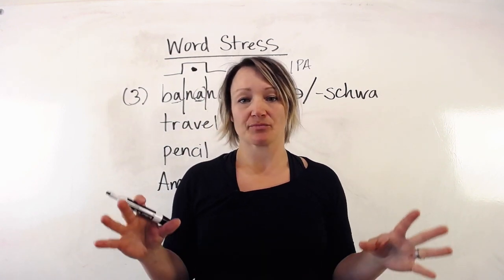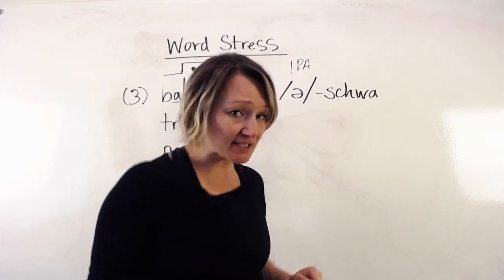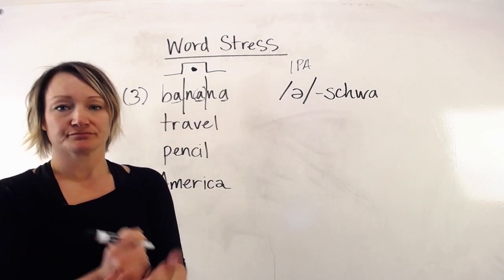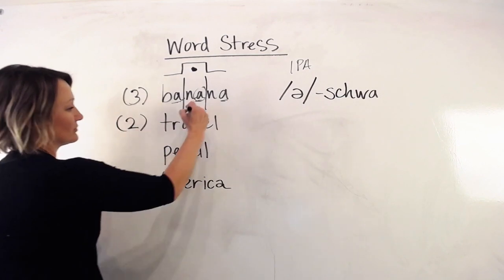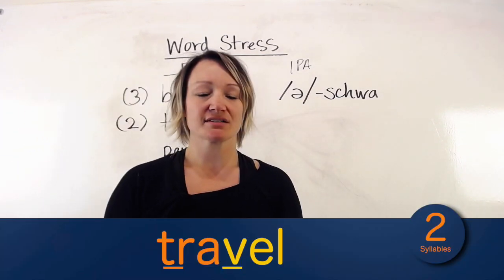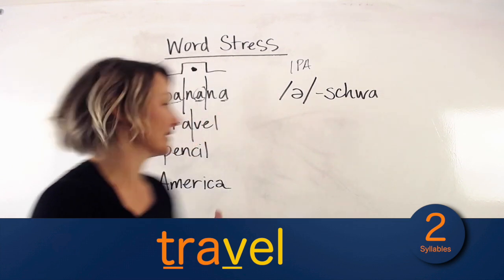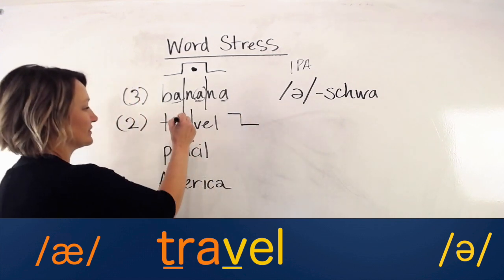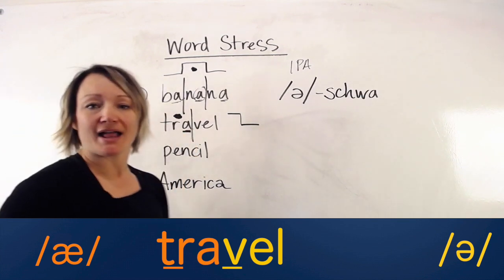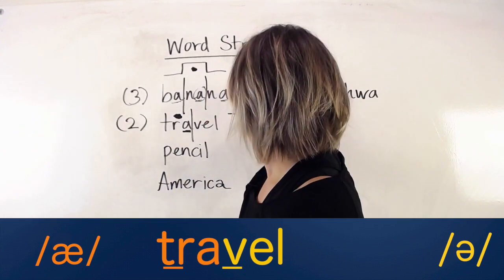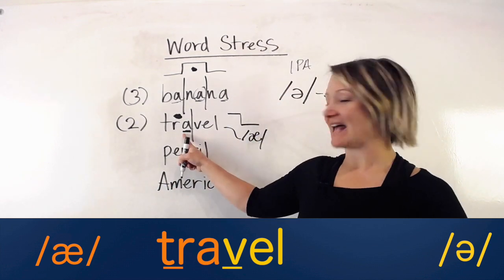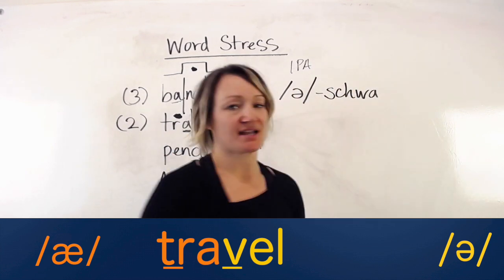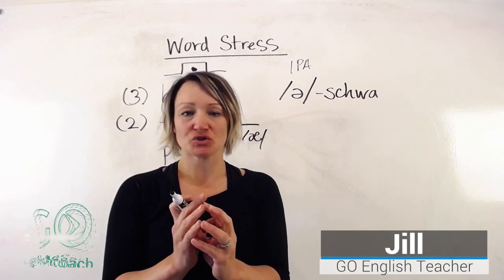This is a really important sound in English — if you can master the schwa and know when and how to use it correctly, your English pronunciation will be very good. Let's practice with 'travel.' How many syllables? Travel — two. Which one is stressed? It's the first one: TRA-vel. This vowel 'ah' is very clear, and then the second syllable reduces to the schwa sound: 'travel.'